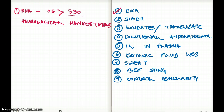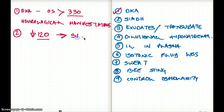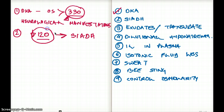Next is SIADH. If the serum osmolarity drops to 120 and remains there, that pretty much guarantees the diagnosis is SIADH. So the key numbers are: osmolarity greater than 330 for neurological manifestations in DKA, and less than 120 for SIADH.